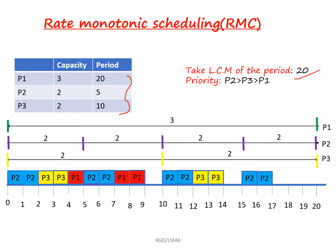How to assign priority: the process with the smallest time period will have the highest priority, and the process with the longest time period will have the lowest priority. According to this problem, the process P2 has the lowest time period, so we will assign P2 as the highest priority process, followed by P3, then P1. P2 has the highest priority because its time period is 5.